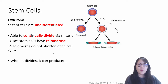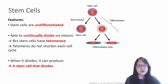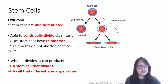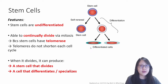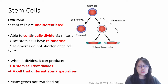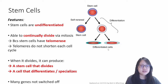And when it does divide, it's interesting because it can produce one of itself — so self-renewal — and it can produce a cell that can differentiate or specialize into another function. So it's very involved in repair. In stem cells, many genes are not switched off, so it's very versatile and it can differentiate into maybe multiple types of cells as well.